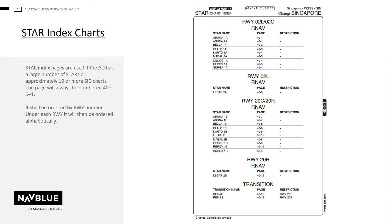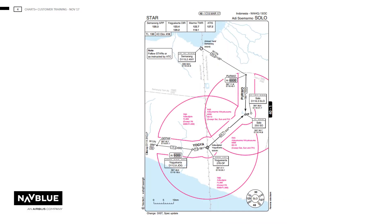It will be ordered by runway order, and under each runway it will then be ordered alphabetically. If official arrival procedures do not have designators, or if the procedures are officially called anything other than STAR, the chart will be called arrival routes.